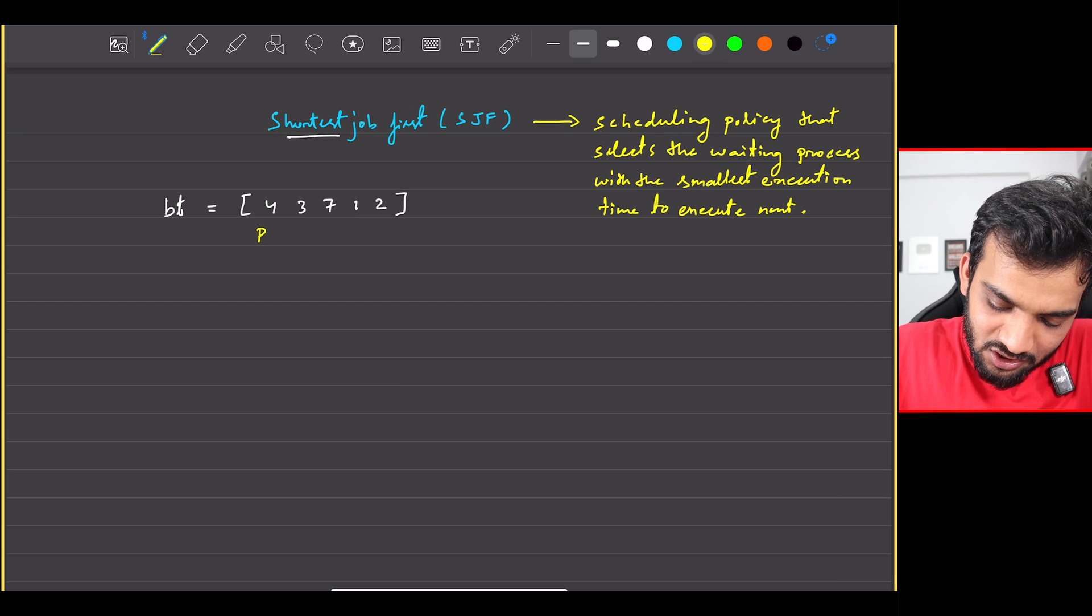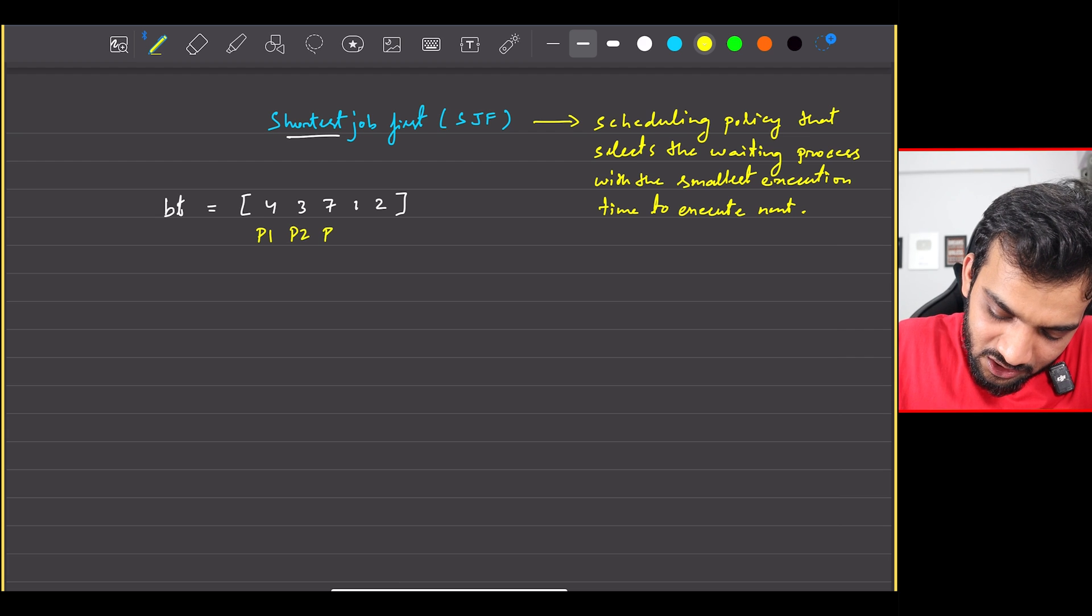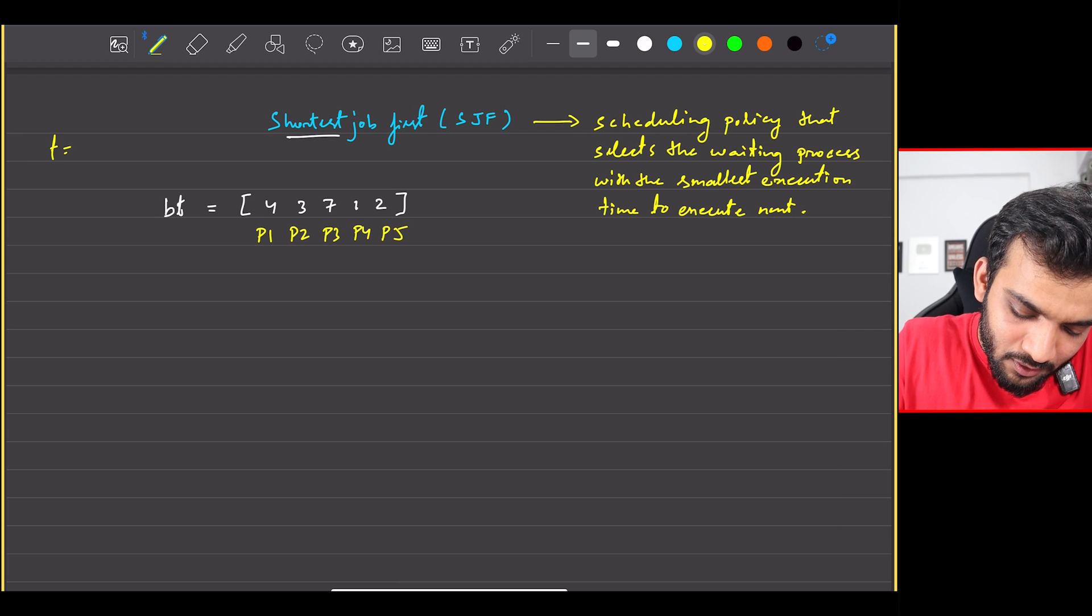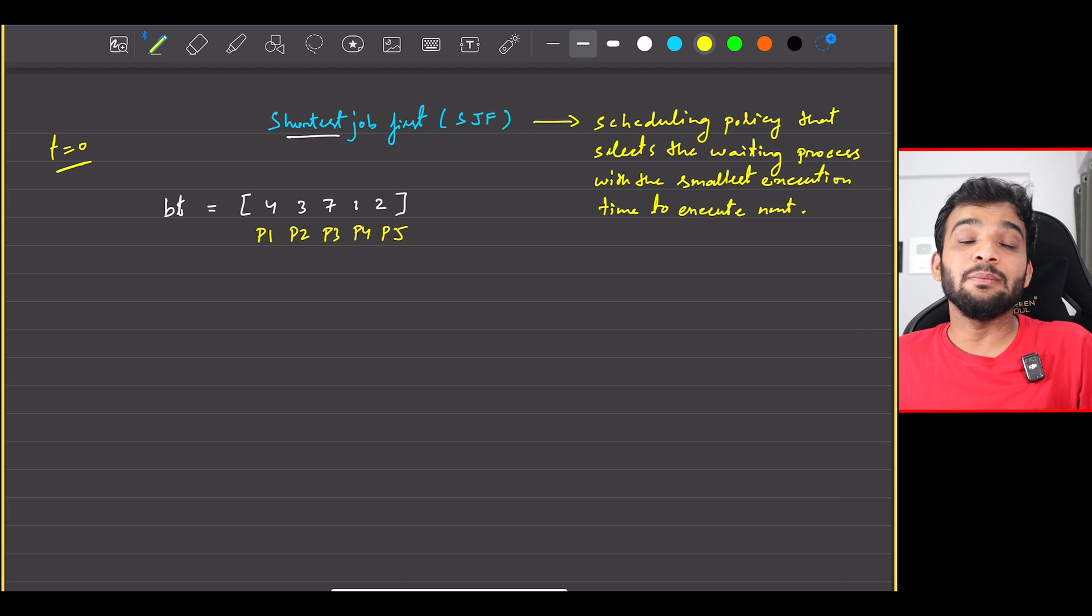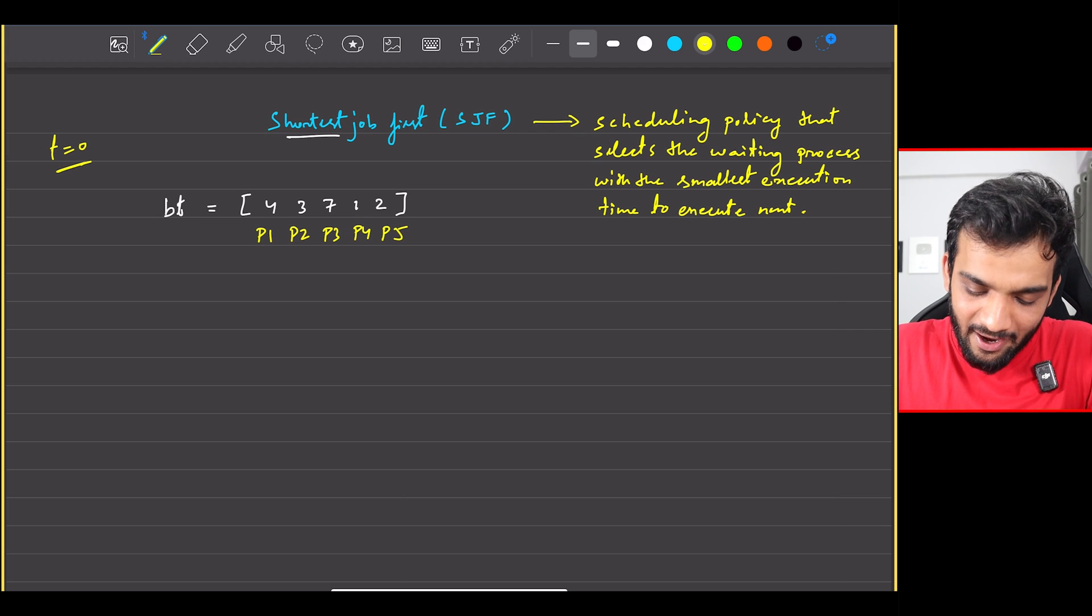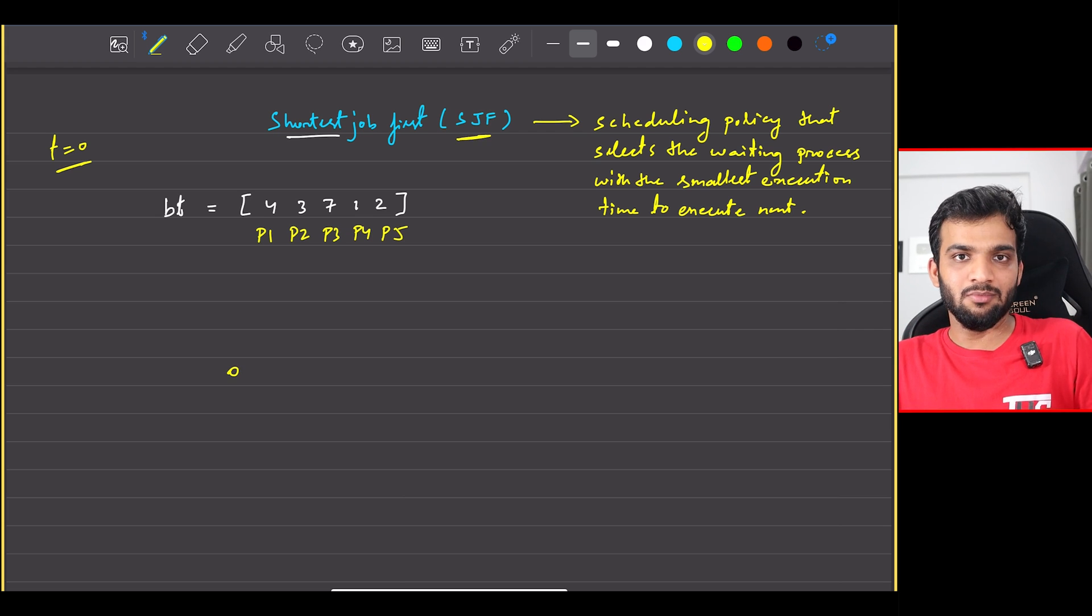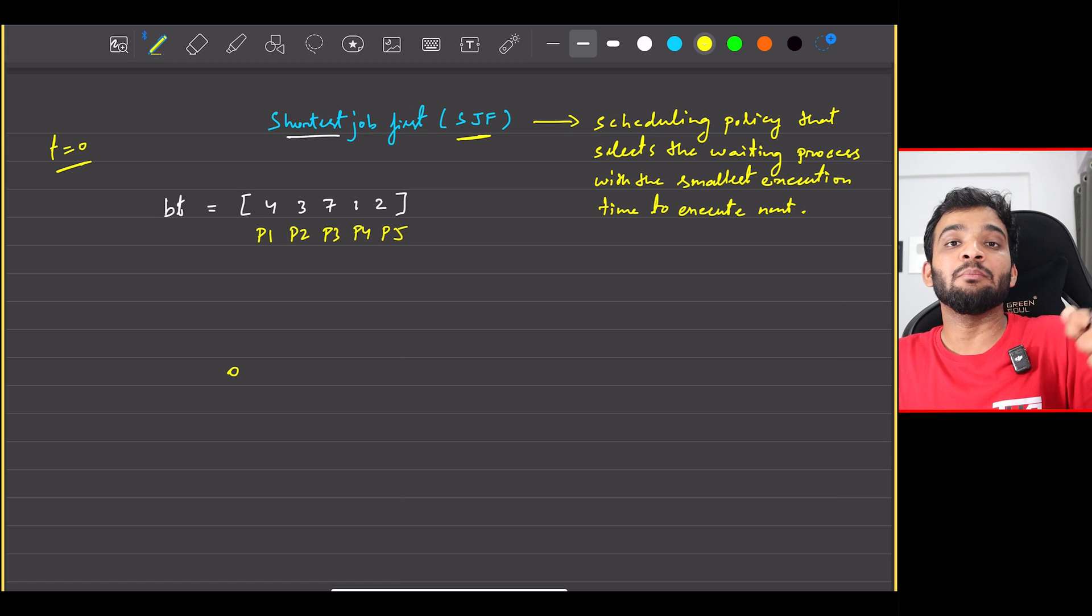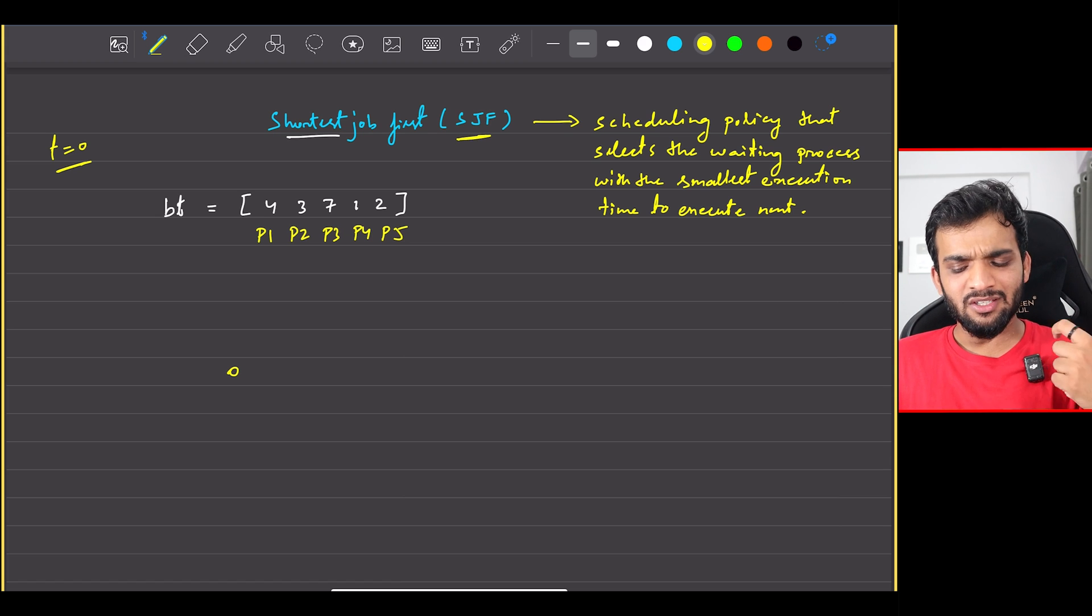So if I have to write down the process numbers, this is P1, this is P2, this is P3, this is P4, this is P5, and each of them is arriving at time zero. So if I have to follow the SJF algorithm, it is stating that the one with the least execution time will be executed first.